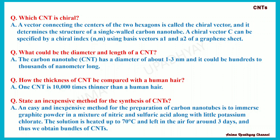What could be the diameter and length of a carbon nanotube? The carbon nanotube has a diameter of about 1 to 3 nanometers and could be hundreds to thousands of nanometers long. One carbon nanotube is 10,000 times thinner than a human hair. An easy and inexpensive method for the preparation of carbon nanotubes is to immerse graphite powder in a mixture of nitric and sulfuric acid along with a little potassium chlorate. The solution is then heated up to 70°C and left in the air for around 3 days, obtaining bundles of carbon nanotubes.